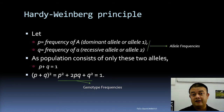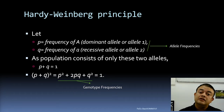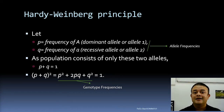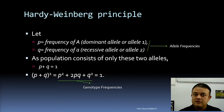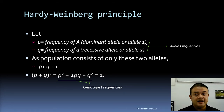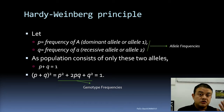Punnett wondered what happens with values other than 0.5. He was playing a cricket match in Britain, and his friend Hardy — a hardcore mathematician — was there. He discussed the problem casually with Hardy, and Hardy said, 'Oh, this is very simple algebra, let me solve it immediately.' Hardy solved it and submitted a letter to the editor of Science. That is why it became renowned as Hardy-Weinberg.